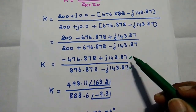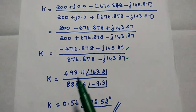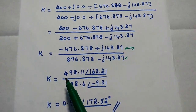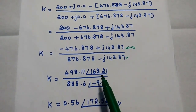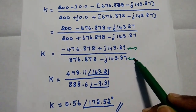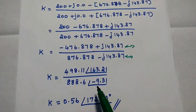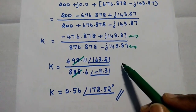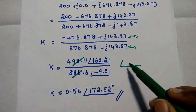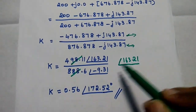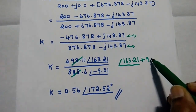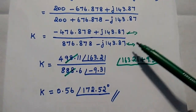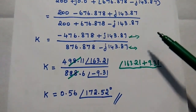Since we must divide in polar form, we convert both numerator and denominator. The numerator 498.11 at angle 163.21 degrees, divided by the denominator 888.6 at angle minus 9.31 degrees. Dividing magnitudes gives 0.561. For the angle, we subtract: 163.21 minus (minus 9.31) equals 172.52 degrees. The rectangular-to-polar conversion was discussed in the previous lecture video.